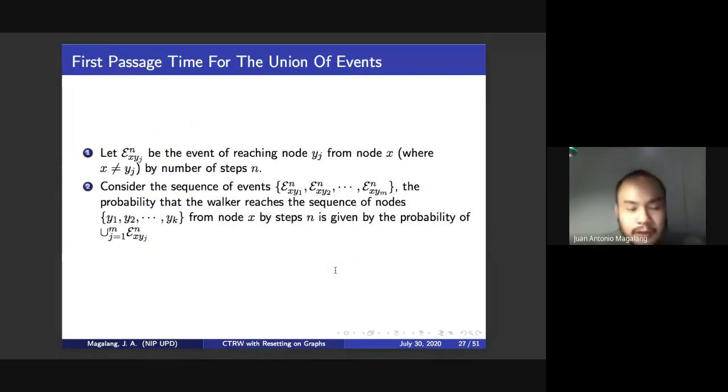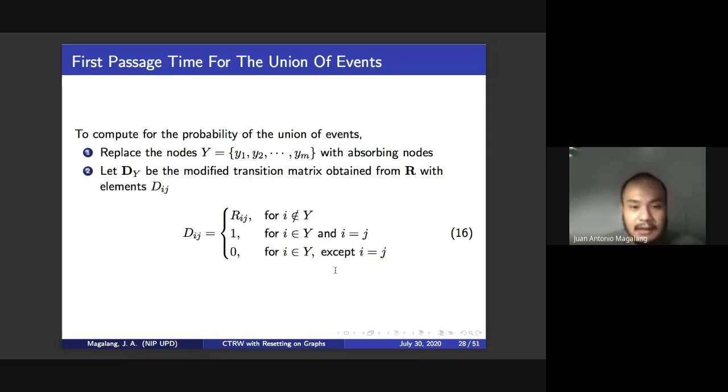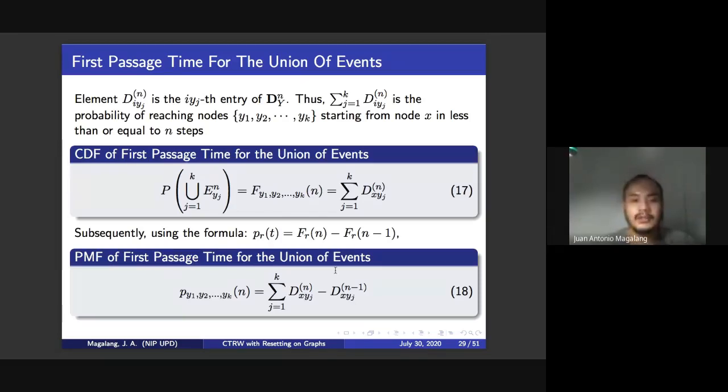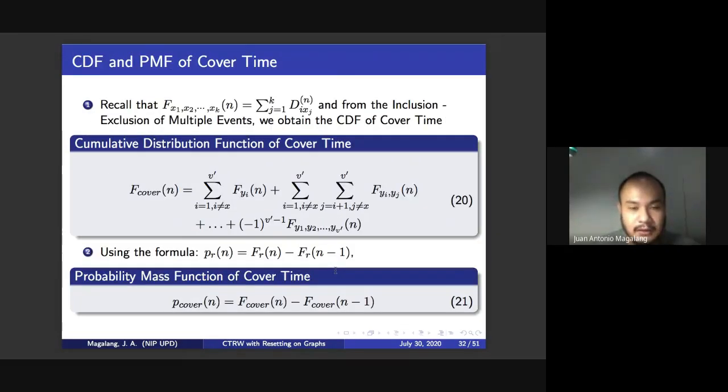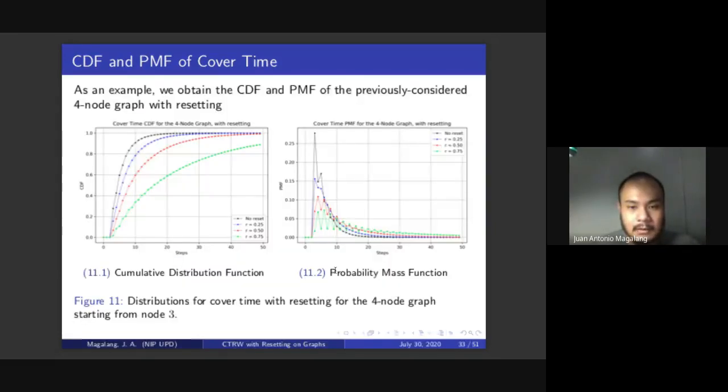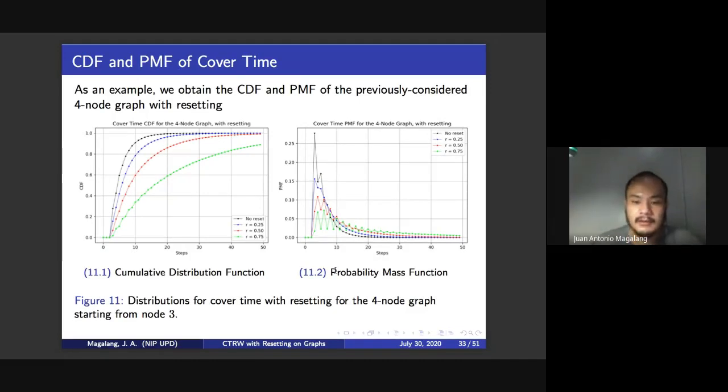Now moving on to cover time, we first discussed the concept of first passage time of union of events, which means that the walker has to reach, to hit all the nodes in the graph individually for it to, of course, cover. So you take this union of hitting all of the nodes in the graph so that you would get the eventual expression for the cumulative distribution function of cover time.